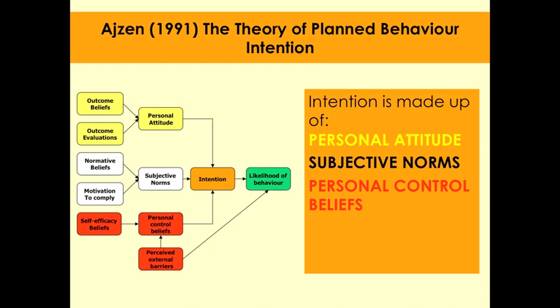The last section is the darker orange section: intention. If you intend to do something, it's likely to happen. Intention is made up of your personal attitude, your subjective norms, and your perceived control beliefs. If your personal attitude is that giving up smoking is worthwhile, your subjective norms are that friends, parents, and teachers say smoking is bad and you respect them, and your personal control beliefs are high — your self-efficacy is high, you believe you can give up, and you have no perceived external barriers — then the intention is to give up, leading to the likelihood of behaviour that you will actually give up.